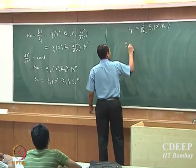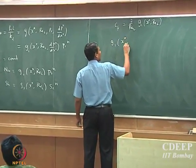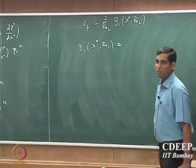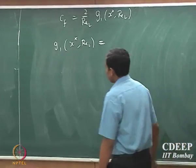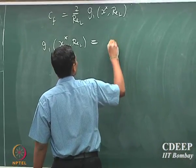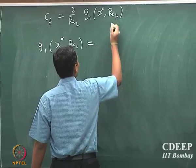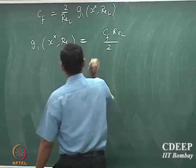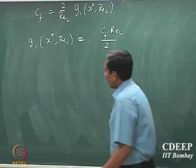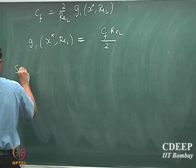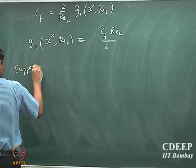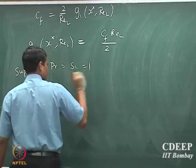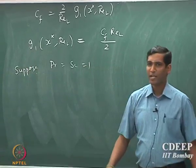We can relate these functional forms. We said G1 of x-star and Re-L — that should be equal to Cf Re-L by 2. And suppose the Prandtl number and Schmidt number are 1 — when can Prandtl number and Schmidt number be 1?